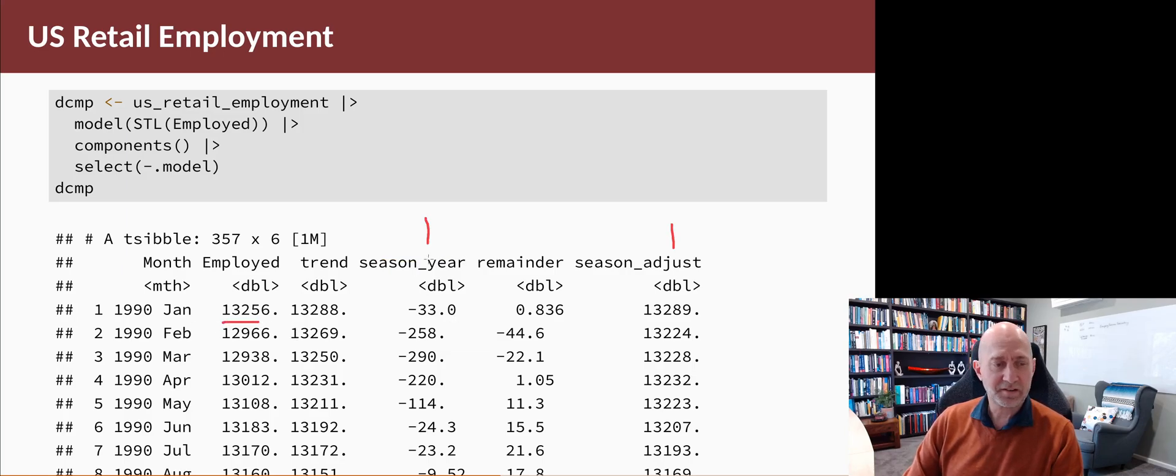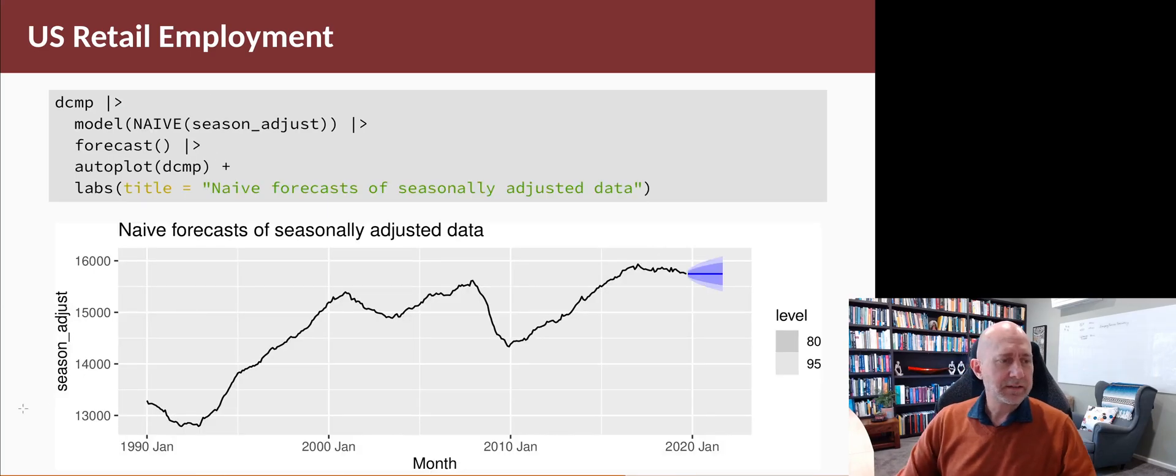So we're going to forecast Season_Year, forecast Season_Adjust, and then add the forecasts together. Let's have a look at Season_Adjust, the adjusted data. You can see in the time plot below that it sort of wanders around a little bit like a random walk, and so a good model for that might be a naive model.